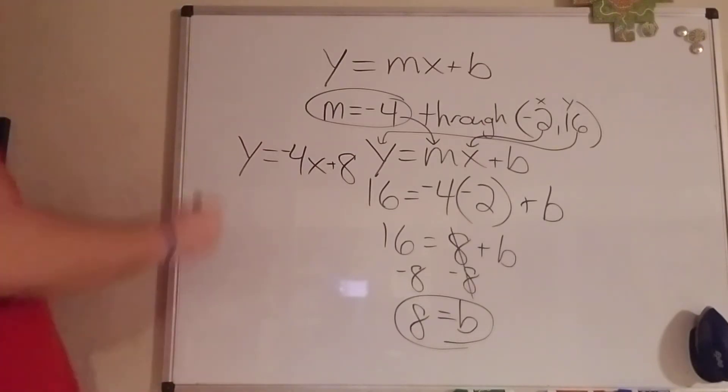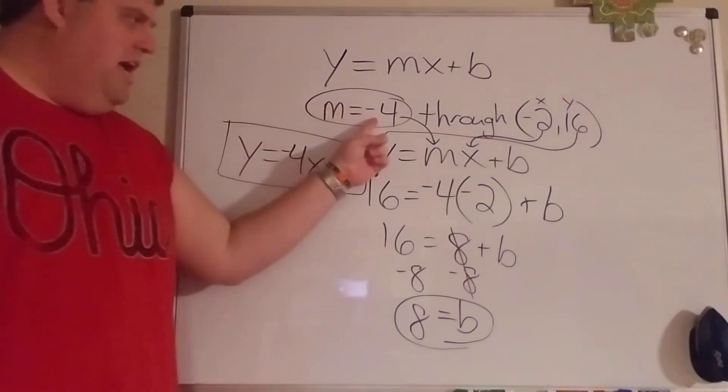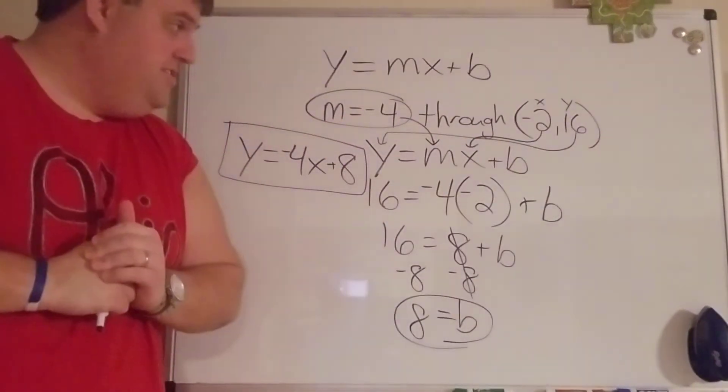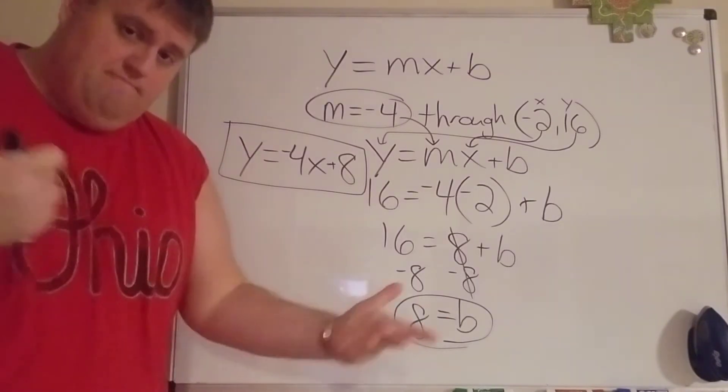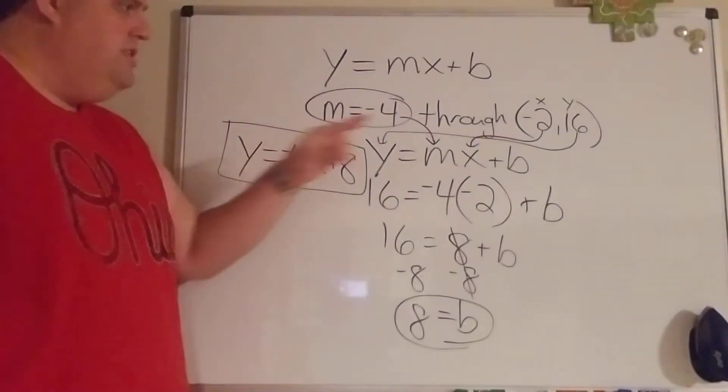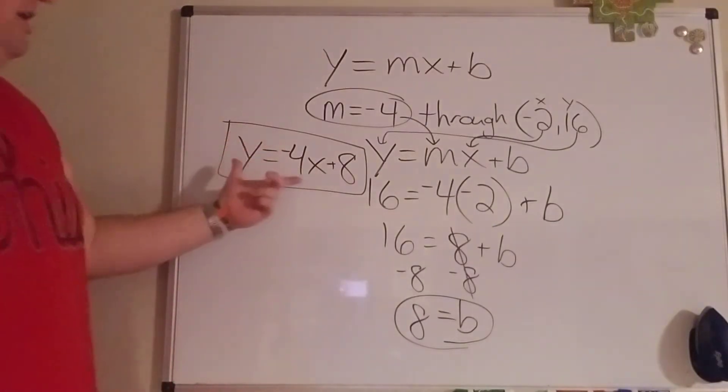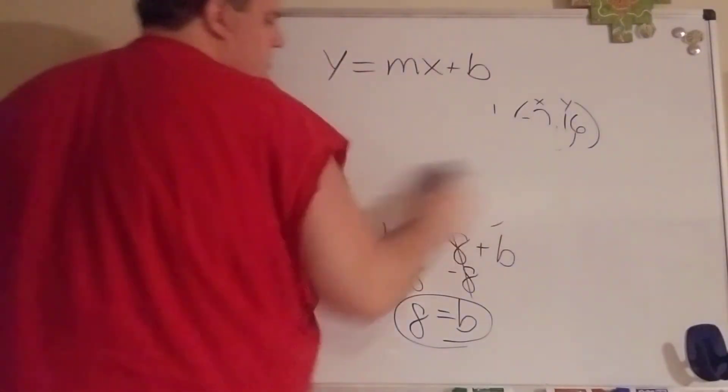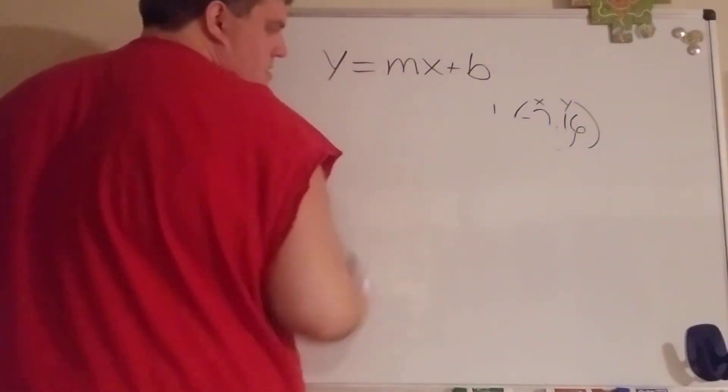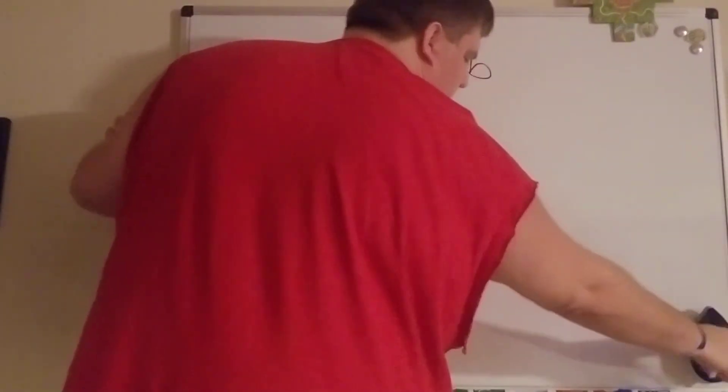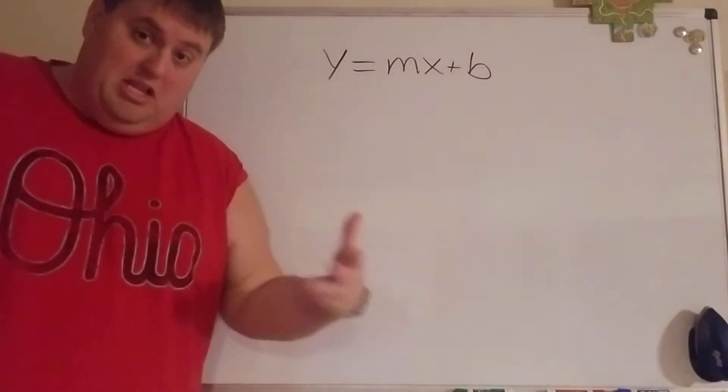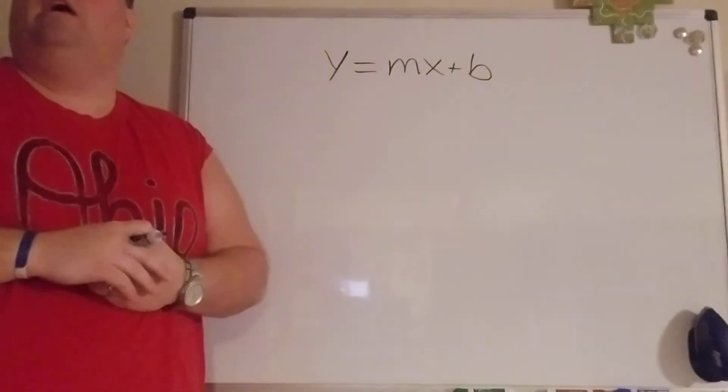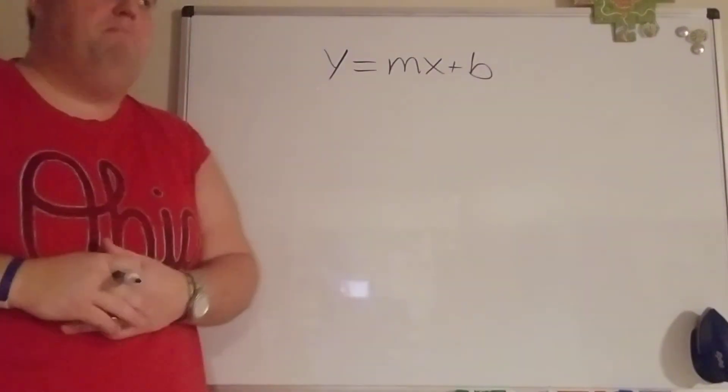Now we have the two pieces of information we need. When I write my equation, y equals m is negative four x plus b is eight. So this would be the only equation of a line that has a slope of negative four and goes to the point negative two, sixteen. That's pretty much it, we're just using the point, we're solving for the y-intercept, and we're writing our equation out.